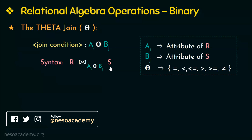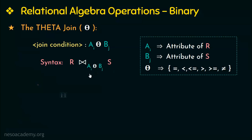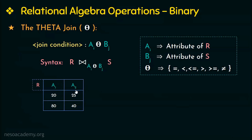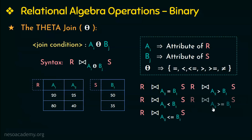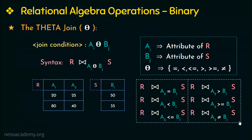Let me take a simple example to demonstrate the theta join. I am taking a relation R with attributes a1 and a2, and another relation S with b1 as its attribute. On these two relations I can apply a join with different comparison operators — a2 equal to b1, a2 less than b1, a2 less than or equal to b1, a2 greater than b1, a2 greater than or equal to b1, and a2 not equal to b1.